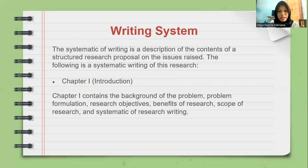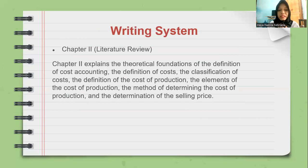Chapter 1 is the introduction, containing the background of the problem, problem formulation, research objectives, benefit of research, scope of research, and systematic of research writing. Chapter 2 is the literature review, explaining the theoretical foundation including the definition of cost accounting, the definition of cost, the calculation of cost, the definition of cost of production, the elements of cost of production, the method of determining the cost of production, and the determination of the selling price.